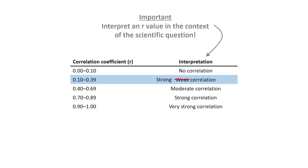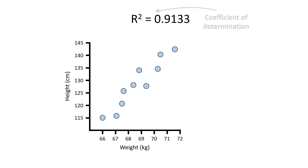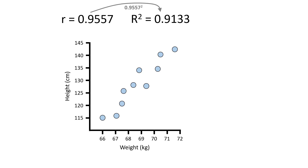Let's now go back to our example. Remember the three main outputs from the Pearson correlation test? Let's now move our focus onto r-squared. r-squared refers to the coefficient of determination. It is an absolute value between 0 and 1. As the name suggests, r-squared is computed by squaring the r-value — in other words, multiplying r by r. So if you don't have an r-squared value from your Pearson correlation test, you can simply square the r-value.